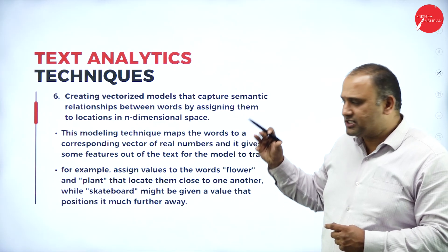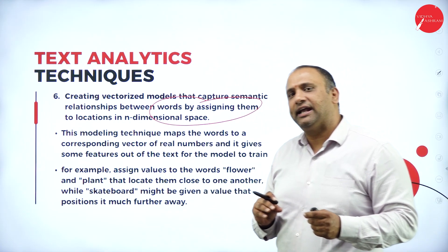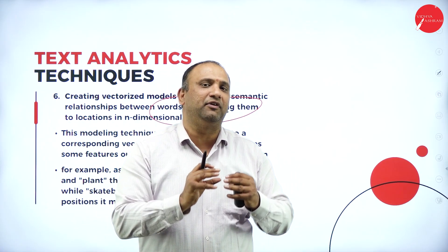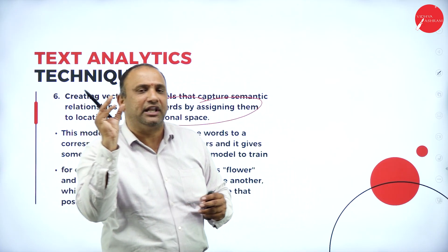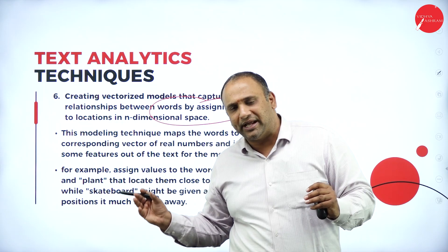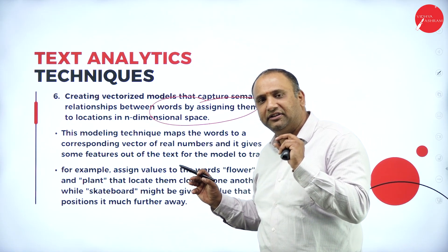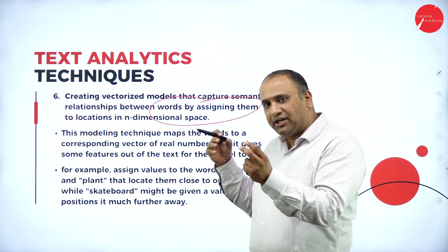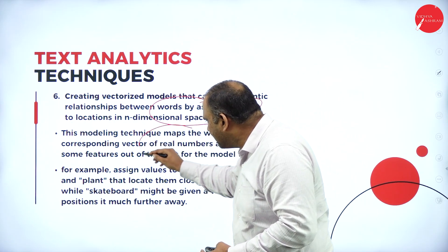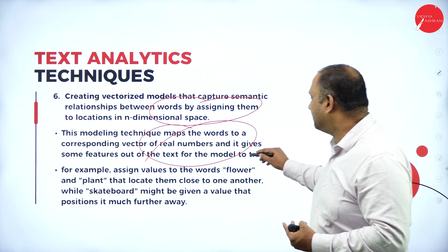Creating vectorized models looks at the word itself, capturing semantic relationships between words in an n-dimensional space. For example, the phrase 'it was so hot' — when we say 'so hot,' 'so cold,' or 'very chill,' those words have a semantic relationship addressing weather, climate, room temperature, or the surrounding environment. All those factors come into understanding the relationship between location and word assignment. The modeling technique maps words into corresponding vectors — real numbers — giving out features of the text model to train.